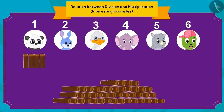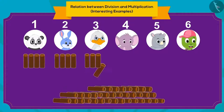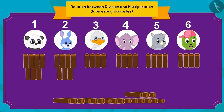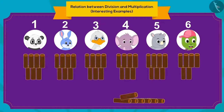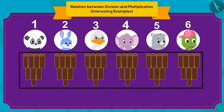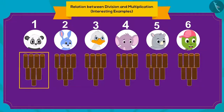To begin with, we can give four wooden sticks to each of his friends. We can then further give them three sticks each. And finally, we can give one stick more to each friend. This way, we can make bundles of eight sticks to divide 48 sticks equally among six friends.